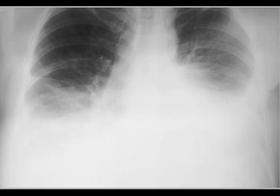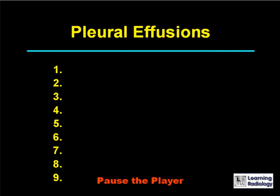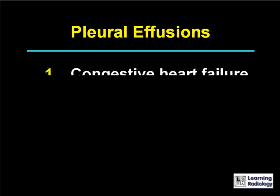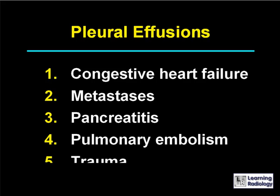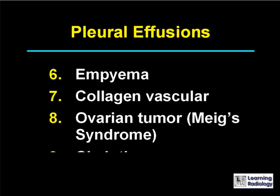Here's the next differential. The differential is for pleural effusions. There are nine possible causes. Causes for a pleural effusion include congestive heart failure, metastasis, pancreatitis, pulmonary thromboembolism, trauma, empyema, collagen vascular disease, an ovarian tumor, and chylothorax.